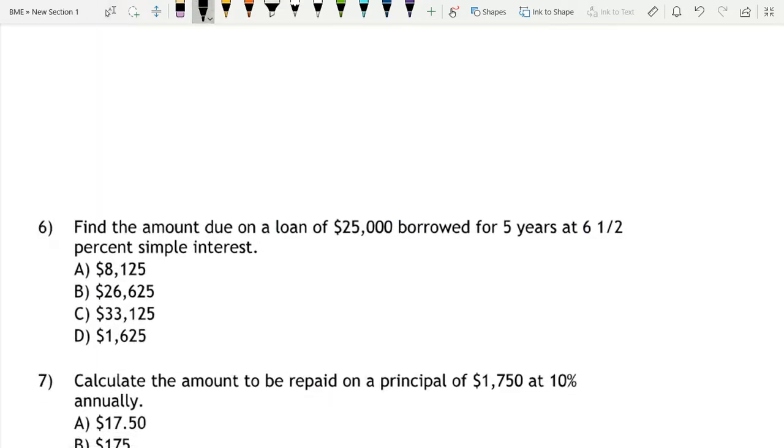Now we go on to question 6. So this is kind of like the previous problem, but slightly tougher. Find the amount due on a loan of $25,000 borrowed for 5 years at 6.5% simple interest.